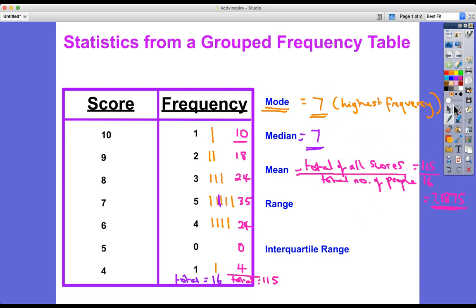The range. Now, this is the biggest takeaway the smallest. What's the biggest score that anyone scored? Well, it was 10. And what was the smallest score that anybody scored? One person scored 4, so 10 subtract 4 equals 6.